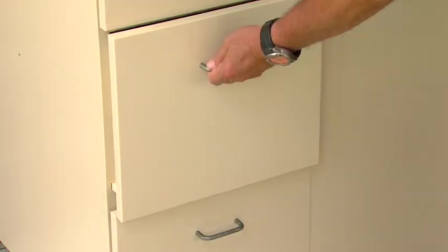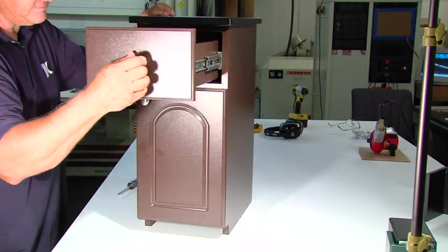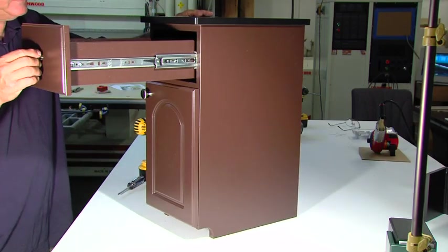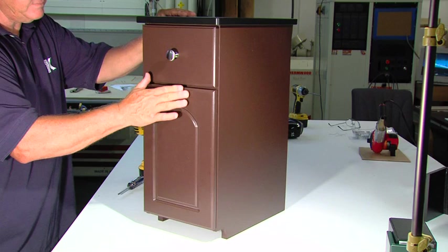King Starboard ST material is self-lubricating, so there is really no need for steel drawer slides. But if you want a really secure attachment and a smoother feel, stainless steel drawer slides work great.